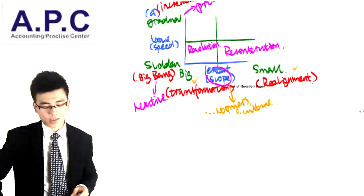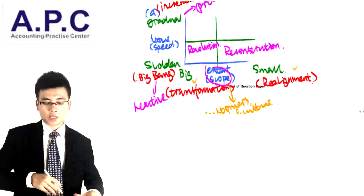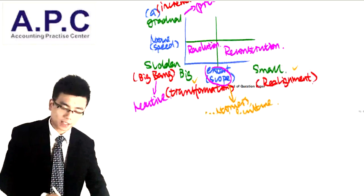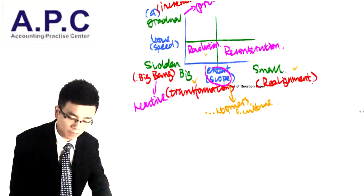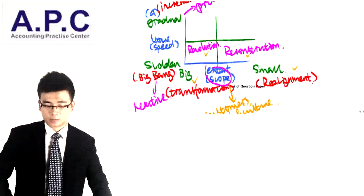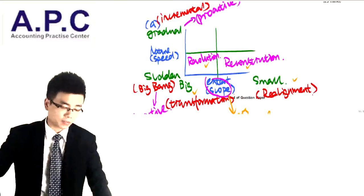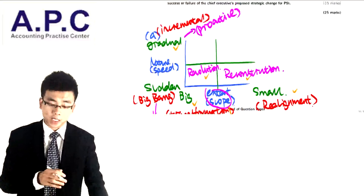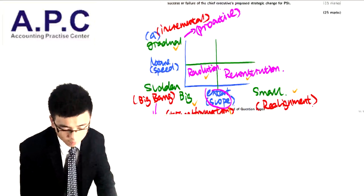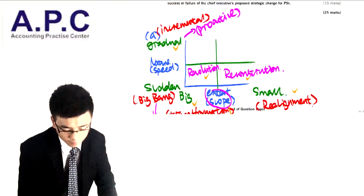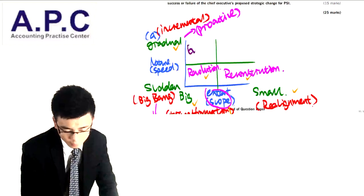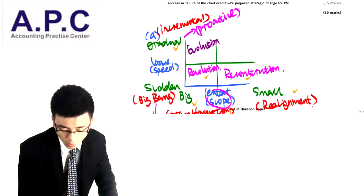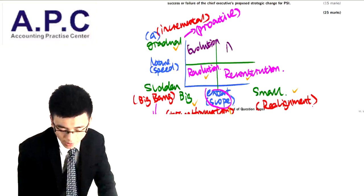So we can see that if it is reactive — sudden change — and big, it's revolution; if small, it's reconstruction. But for the proactive change, which is the gradual change, if it is big it is called evolution, and if it is small it's called adaptation.